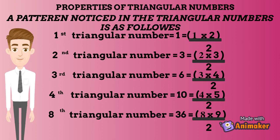Properties of triangular numbers. A pattern noticed in triangular numbers is as follows: the first triangular number 1 equals 1 multiplied by 2, divided by 2. The second triangular number 3 equals 2 multiplied by 3, divided by 2. The third triangular number 6 equals 3 multiplied by 4, divided by 2. The fourth triangular number 10 equals 4 multiplied by 5, divided by 2. The eighth triangular number 36 equals 8 multiplied by 9, divided by 2.